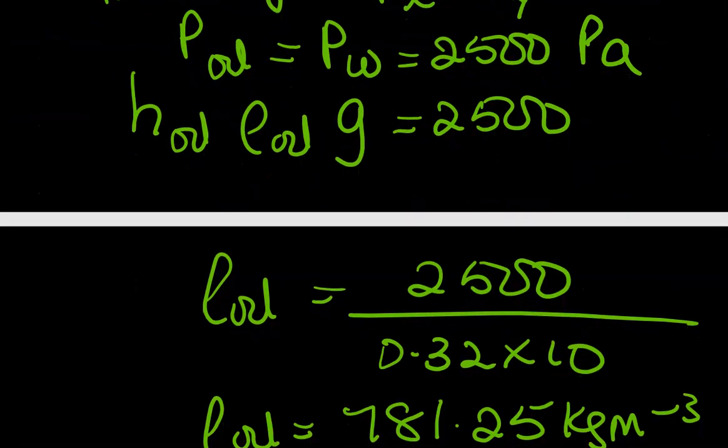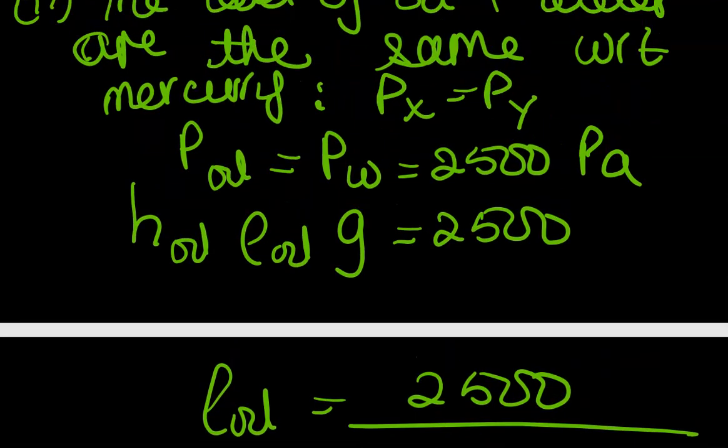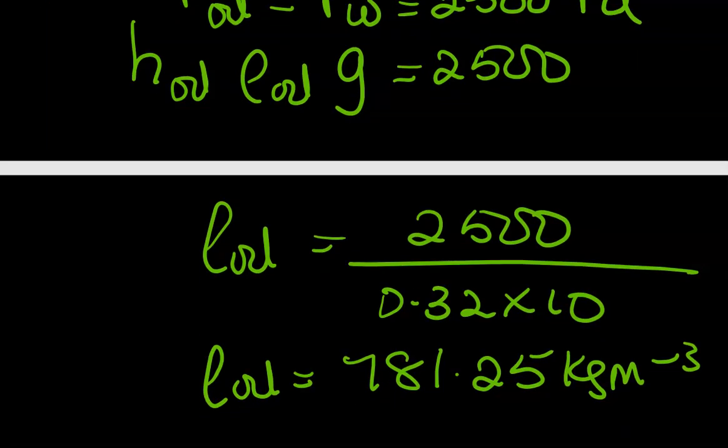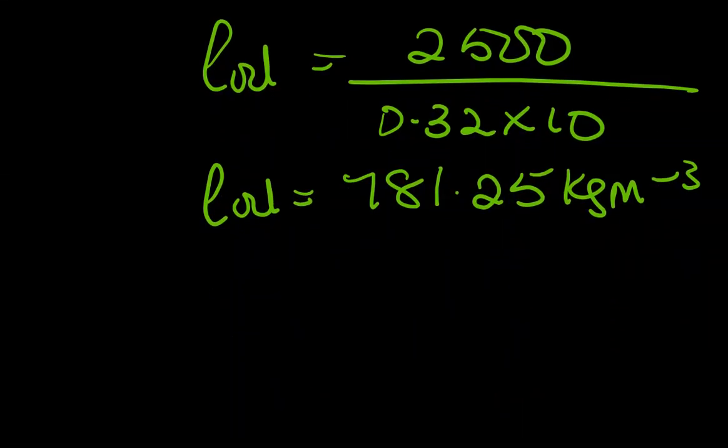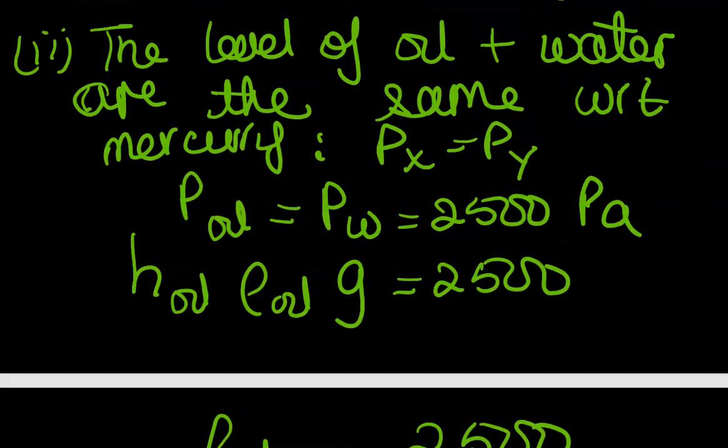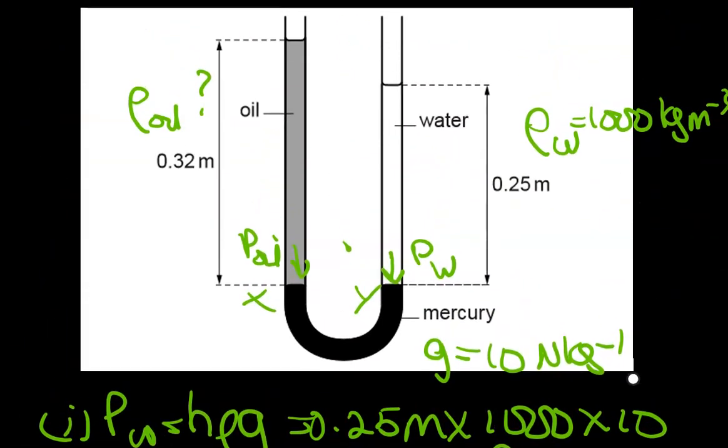I have my 2500 divided by, making ρ the subject, 0.32 by 10, so the density of oil is 781.25. From this you can get questions where you are mixing liquids in either arm of the U-tube, and it's one of the harder questions that typically you will find maybe at Cambridge or any GCE exam.